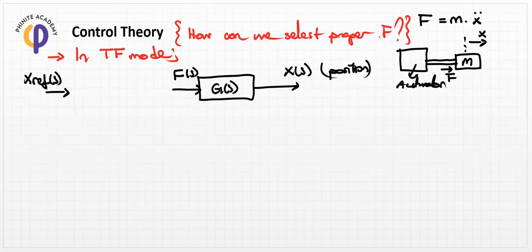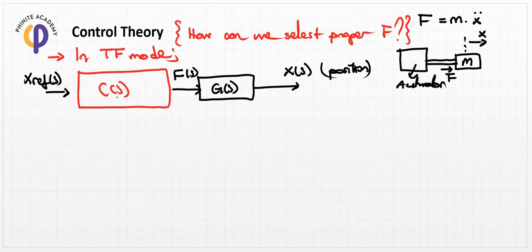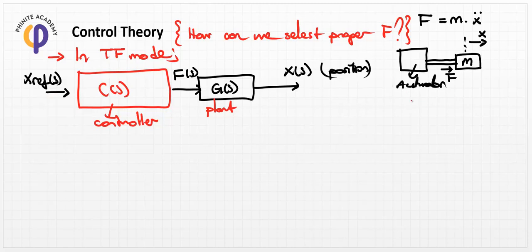The main question of control theory is how to select the proper force, or in general, the proper input variable. If we add a controller block C(s) in the loop, it is a controller approach dependent on time or frequency. We can condition this plant model to track x(s) with x_ref. In real life, we use an actuator model and obtain information from data sheet values.